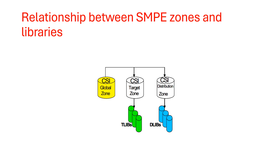The next topic is the relationship between SMP zones and the libraries. SMP is a tool to manage software installation and modification on the z/OS system. When we talk about libraries, we have two: TLIB and DLIB. We also need to understand the relationship between the zones. The CSI, or consolidated software inventory, is a data set used to track the status and content of the system software, including all the libraries.